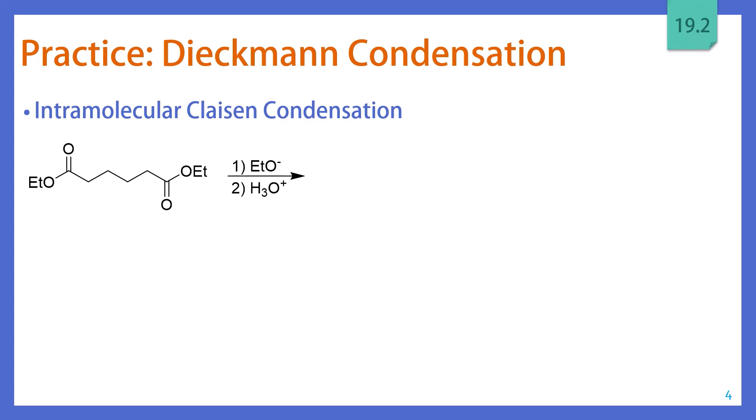Our next practice problem is actually going to introduce another reaction. This is just another Claisen condensation, but it's intramolecular, and it also has its own name. It's the Dieckmann condensation. So in this reaction, we have a diester. And this reaction is completely identical to what we've already done. So the ethoxide is going to come along and deprotonate one of the esters. And since this molecule is symmetrical, it doesn't matter which ester we deprotonate or what side we start on. And then this enolate is going to attack the other side.